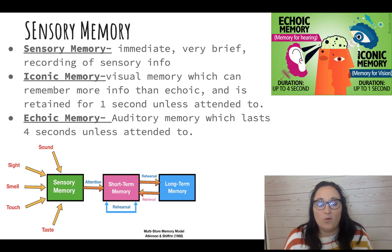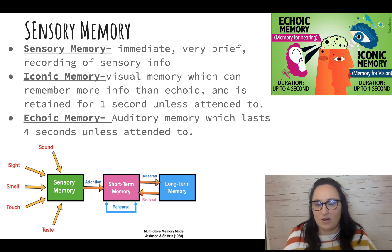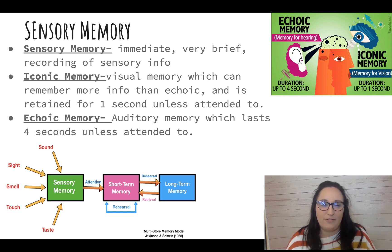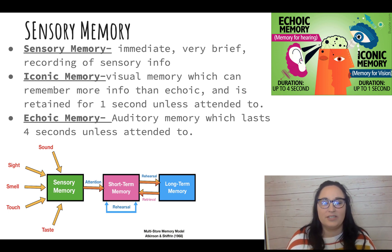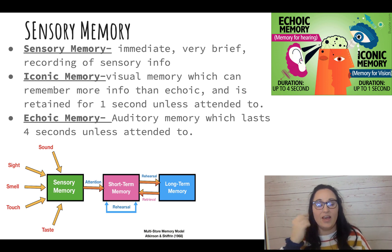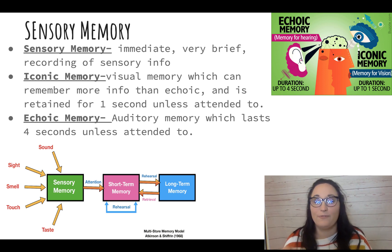In order to have memories, first we have to sense information — hear it, see it, experience it in whatever sense we're experiencing it. Sensory memory is immediate, very brief, and most of the time just goes away. Iconic memory — think of Icon or 'I' — it's visual memory and lasts about one second. Echoic — think of an echo — it's auditory memory which lasts for four seconds.